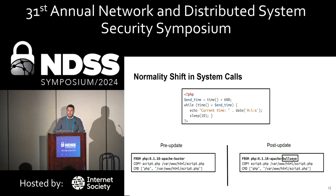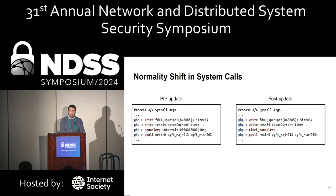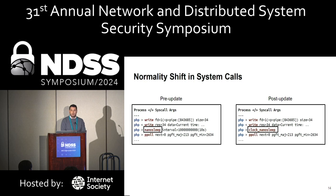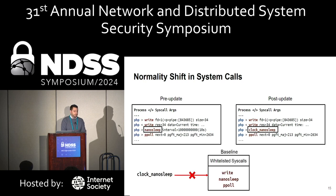If we decide to upgrade the base operating system from Buster to BusyBox, at runtime we observe a slightly different set of system calls. Specifically, clock_nanosleep seems to replace nanosleep — caused by an upgrade at the glibc package level. In terms of performance, it's great, but from the perspective of the baseline we just built, it's problematic. Because clock_nanosleep does not exist in the baseline, the anomaly-based IDS will throw a false alarm.